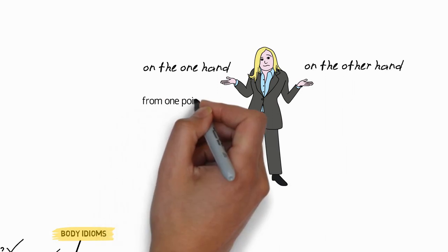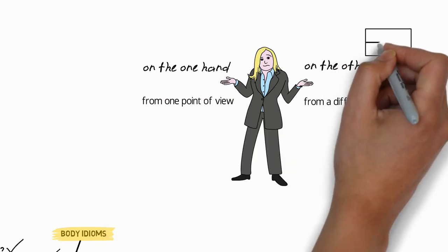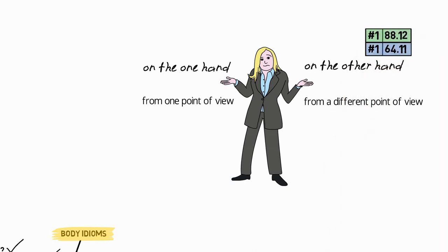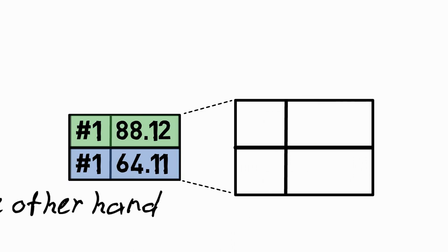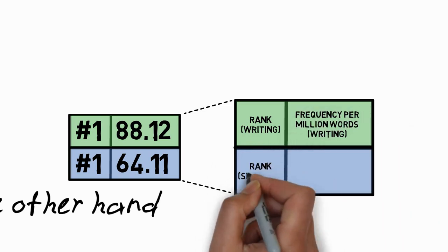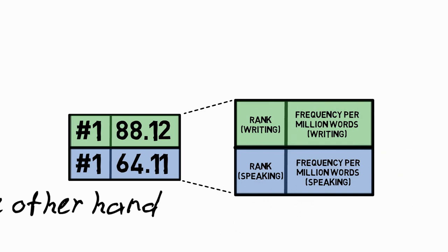On the one hand means from one point of view, on the other hand means from a different point of view. On the other hand, which can be used on its own, is actually the most common idiom in academic English in both speaking and writing, while on the one hand is the third most common idiom in both speaking and writing. You can see some numbers then, I'll just briefly explain those because I'll be using them throughout the video. So these numbers come from Miller's study, and the green ones are for writing, the blue ones for speaking.